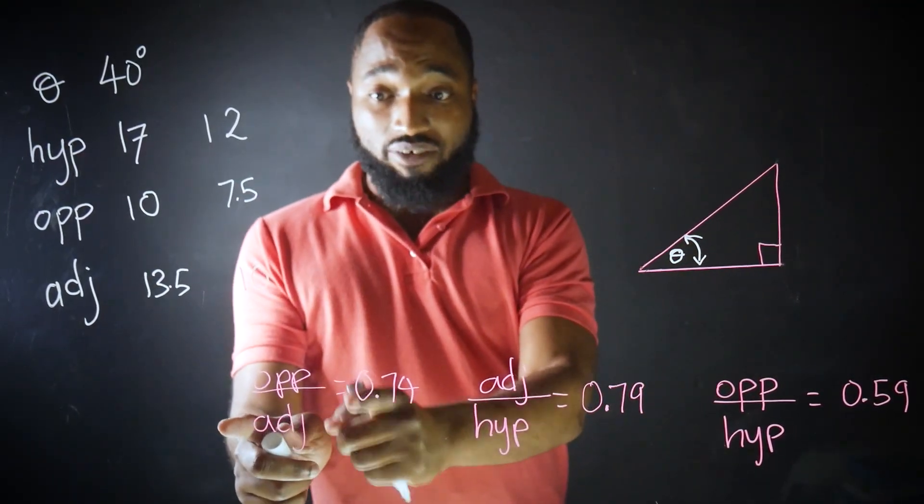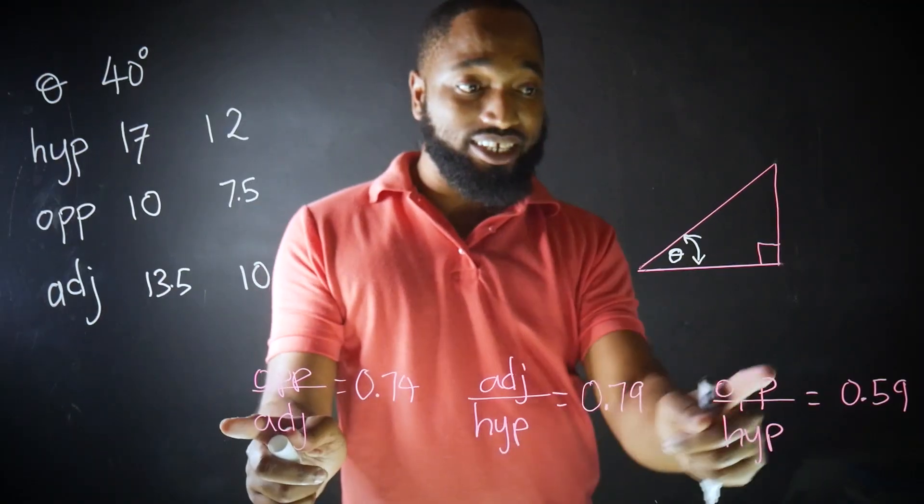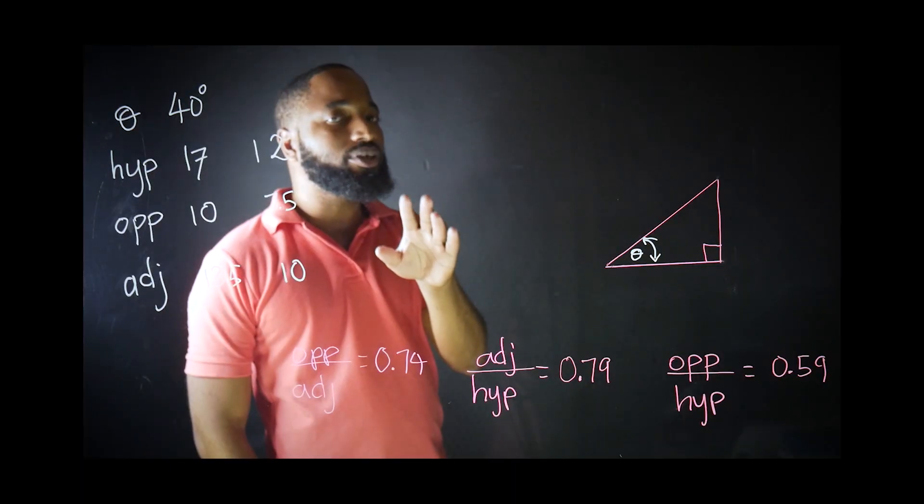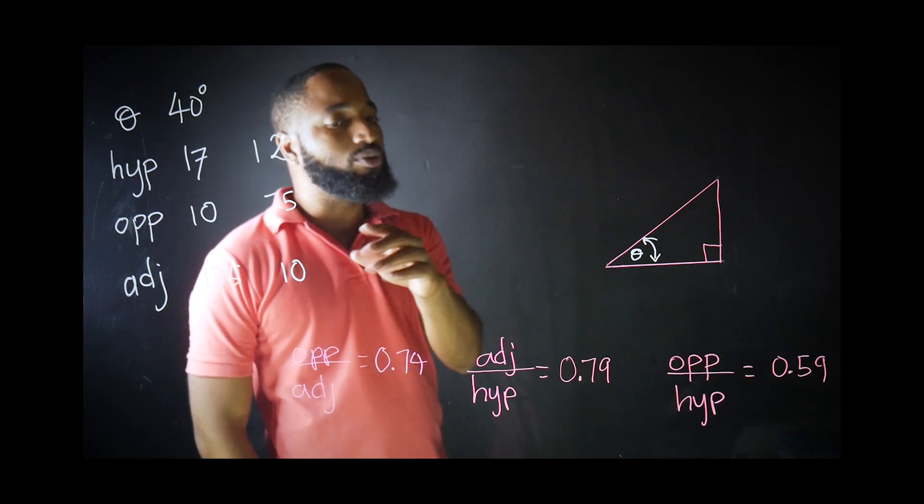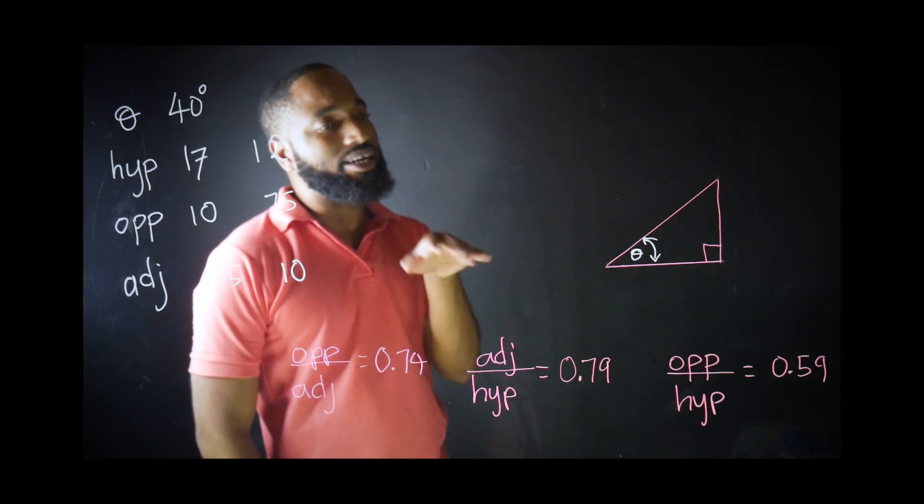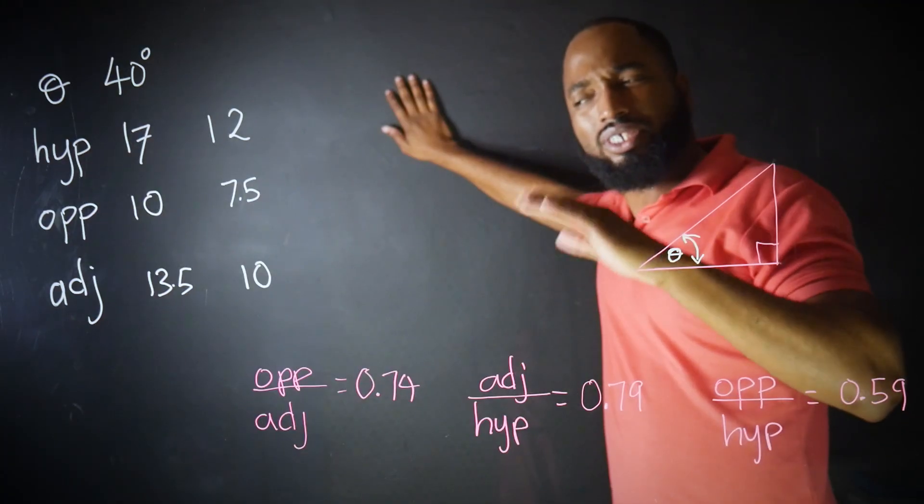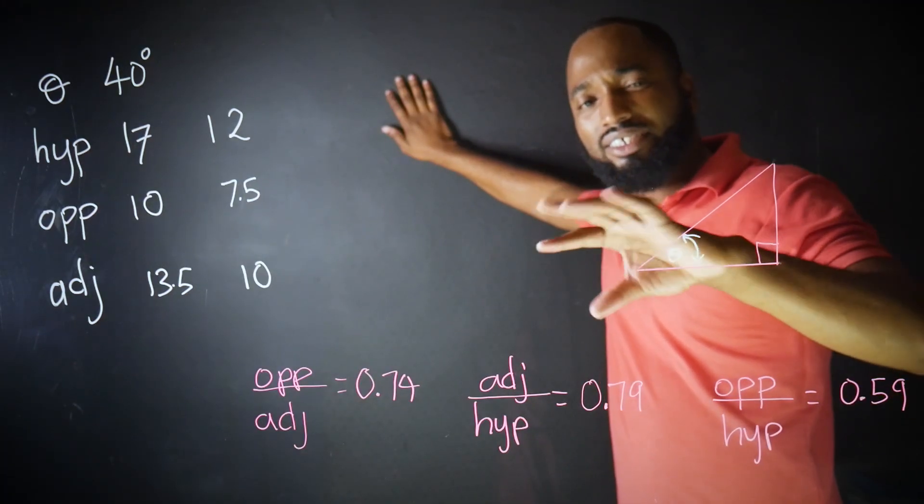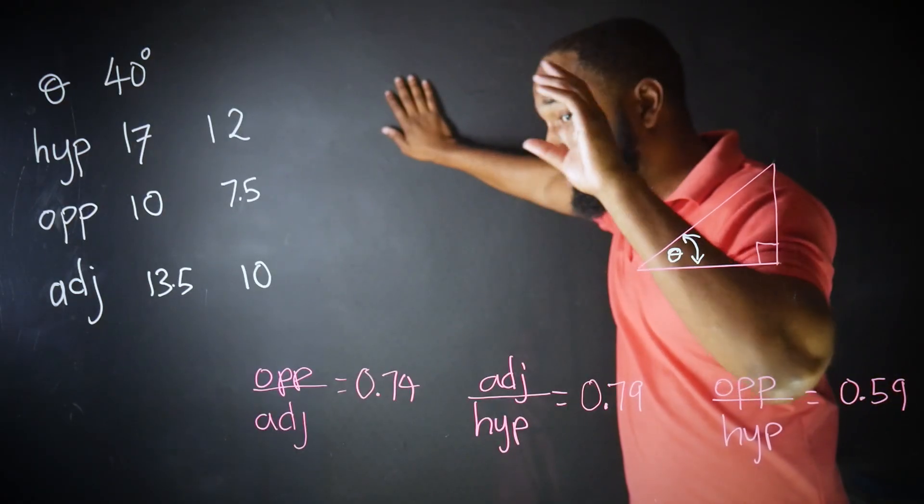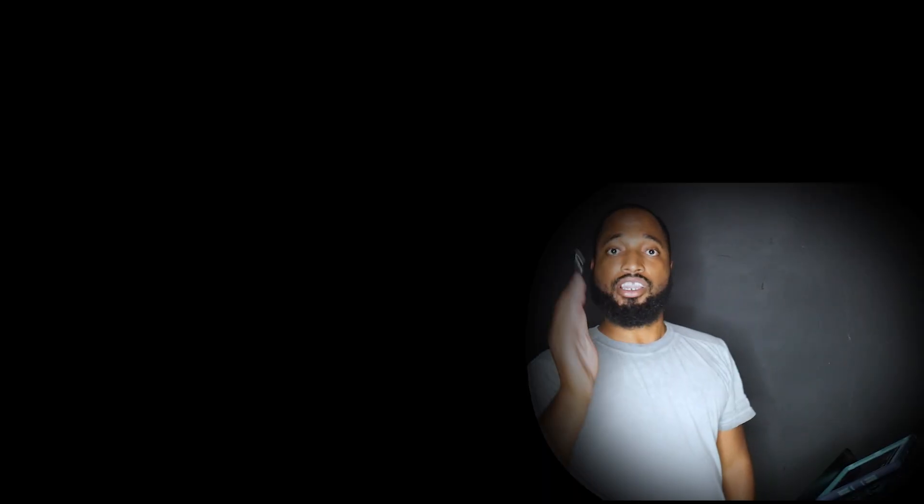The ratios of the sides remain the same. If I put these into these formulas, approximately. My diagram could be a little, you know. So what you're saying is that it doesn't matter the size of the right angle triangle. Once the angles remain the same, the ratio of the sides remain the same. Yup.